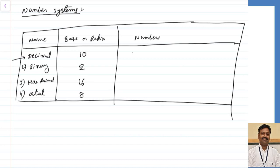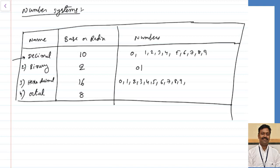For example, the decimal number system has 0, 1, 2, 3, 4, 5, 6, 7, 8, and 9 — a total of 10 different symbols. For binary, only two types of symbols are there: 0 and 1. For hexadecimal, there are 16 digits: 0 through 9 are copied from the decimal system, then 10 is represented by A, 11 by B, 12 by C, 13 by D, 14 by E, and 15 by F. For octal, there are 8 symbols: 0, 1, 2, 3, 4, 5, 6, and 7.